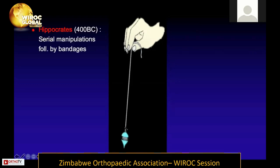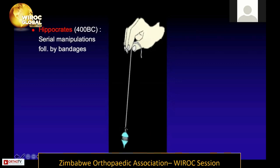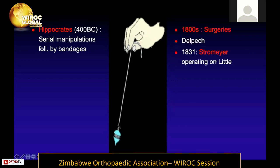In the 4th century BC, Hippocrates, the father of medicine, recommended treating clubfoot by conservative methods. He said you should manipulate the foot gently and then tie the foot with resin bandages to correct it. By the 18th century, treatment became surgical — Delpech and Stromeyer from Germany were strong proponents of surgical treatment. Little, after whom Little's disease is named, had a clubfoot treated by Stromeyer with a tendo Achillis tenotomy.